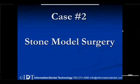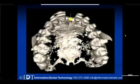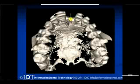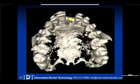Case number two: this is stone model surgery. As I said, I feel like this one is one of the more accurate out of the three, but not all patients are a candidate. What makes a patient a candidate for this is the ability to see the occlusal surfaces. We have to be able to see the incisal edge. We have to be able to see every cusp and groove pretty clearly, because what we do is we take a model and we merge that with a scan.